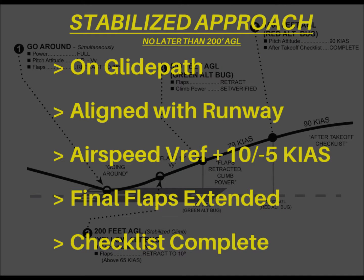In order for an approach to be considered stabilized, all of the following conditions must be met: the aircraft is at the proper height for a normal descent to landing in the runway touchdown zone; the aircraft is aligned with the runway centerline; the airspeed is within plus 10 knots to minus 5 knots of the target approach speed; and the aircraft is properly configured for landing, meaning the final flaps have been set and the before landing checklist has been completed. Any single condition that has not been met by 200 feet above the ground is cause for an immediate go-around.